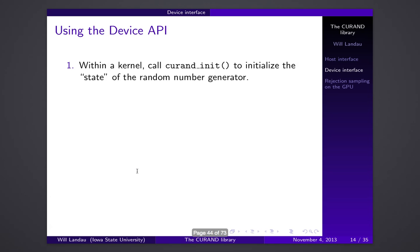The device interface is a bit harder to use, but more flexible. It allows you to micromanage more things and take care of the parallelism yourself. You can run this even if you don't know how many random numbers you'll need. Typically, you're not just going to use one random number generator — you're going to want to generate random numbers in parallel, which means you need to initialize thousands or hundreds of thousands of random number generators simultaneously.